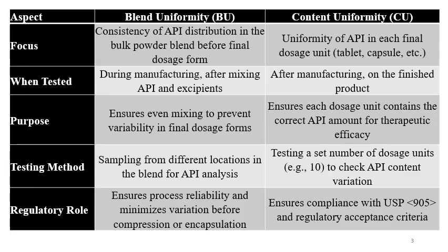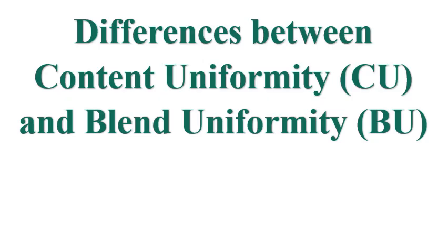The regulatory role of blend uniformity is to ensure process reliability and minimize variations before compression or encapsulation. The regulatory role of content uniformity is to ensure compliance with USP 905 and regulatory acceptance criteria. If blend uniformity is meeting the criteria, there are high chances that content uniformity will pass; but if blend uniformity is failing, the chances of content uniformity passing are comparatively less.